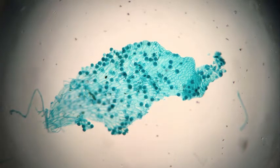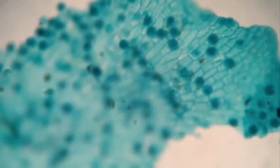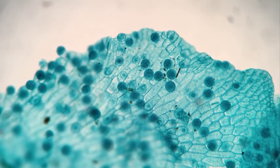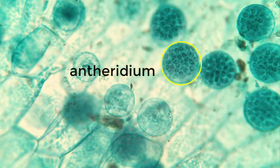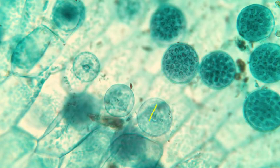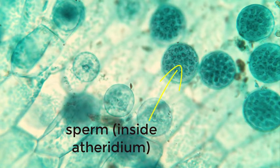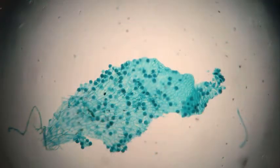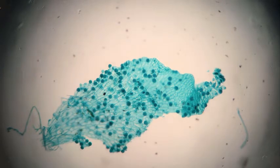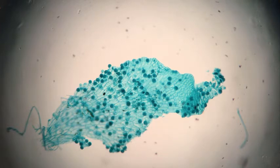One common trigger sending gametophyte development down either the male or female path is, roughly speaking, the quality of the environment. Some spores get lucky and end up in a perfect spot with access to light, water, and mineral nutrients at optimal levels. These grow into larger, healthier gametophytes that can support the early growth of a sporophytic child—and they develop as females, with archegonia only. Other spores end up in suboptimal conditions, grow poorly, and can't support a real child, but they can manage to produce a few sperm cells—so these develop as males, with only antheridia.